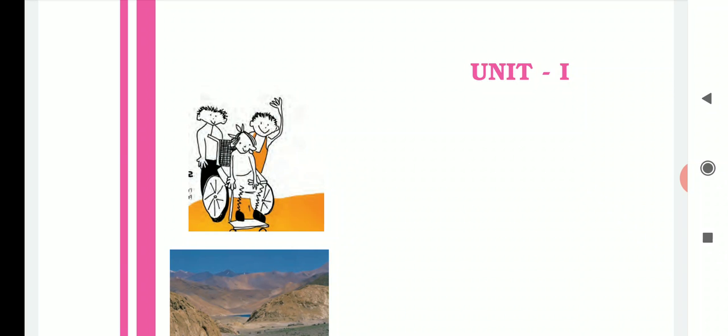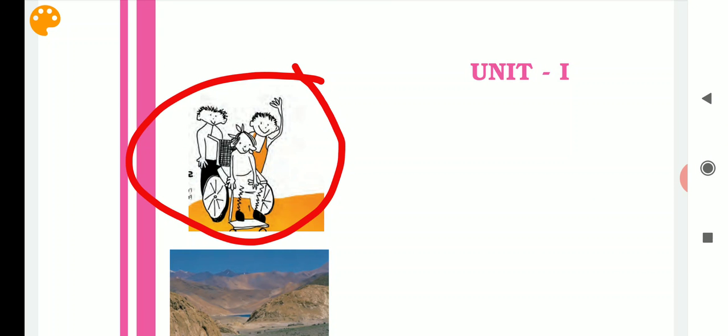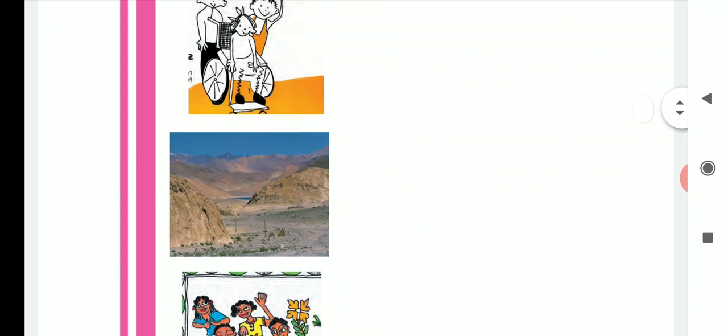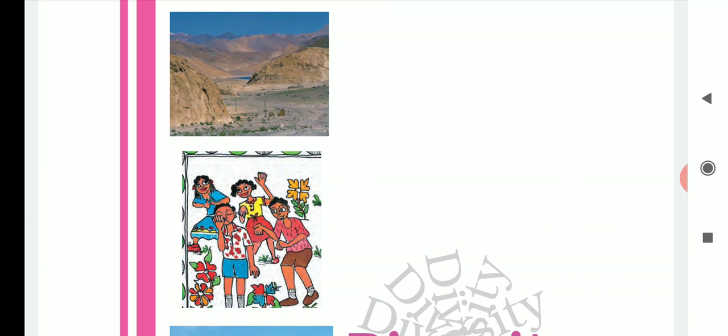Today I am starting with Unit 1, which talks about diversity. In this picture, you can see there are three children. Each child is different — one is without a dress, one is wearing a dress, and another person is differently abled and not able to walk. This is one example of diversity, meaning differences in appearance. In the second photo, you can see a mountain and a plain area in the same place — that is a variation.